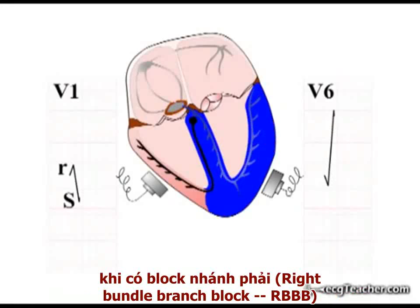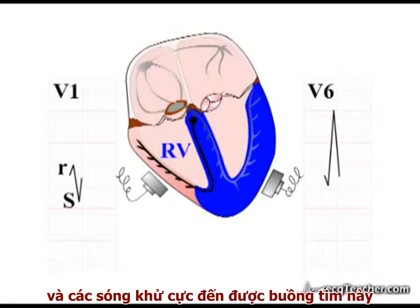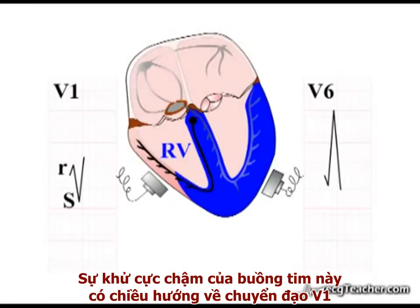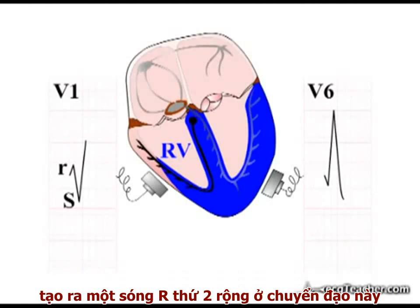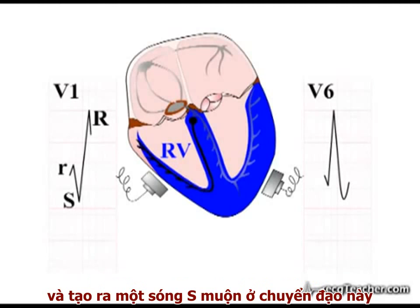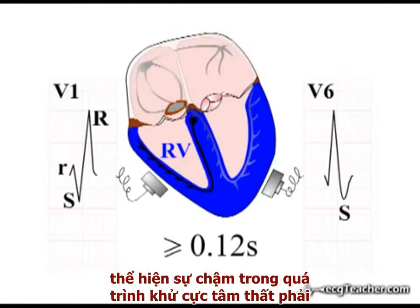In the presence of right bundle branch block, depolarisation of the right ventricle is delayed and travels to the chamber by direct cell-to-cell contacts. Slow depolarisation of this chamber moving towards V1 produces a wide second R wave in this lead. Delayed right ventricular depolarisation moving away from lead V6 produces a late slurred S wave in this lead. The QRS complex is broad, reflecting the delay in right ventricular depolarisation.